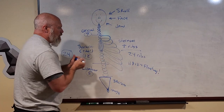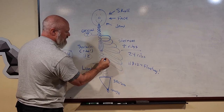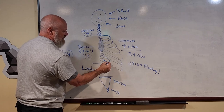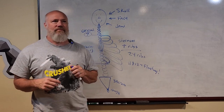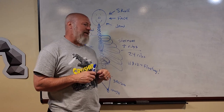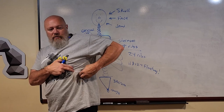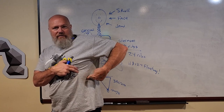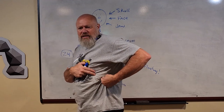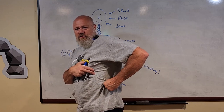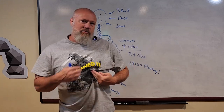Floating ribs are so named because when they come around from the backbone, they don't attach to the sternum — their ends don't touch anything, so they just stick out on the side. You can feel them if you find the edge of your rib cage and feel around — it can be a little uncomfortable or ticklish. Those spare ribs, number 11 and 12, don't reach all the way around to the sternum.